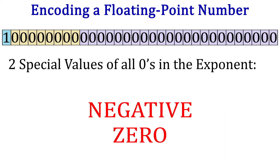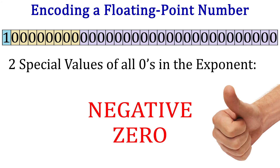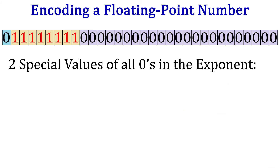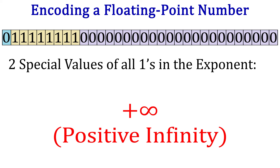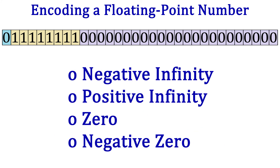If all the exponent bits are one, the sign bit is one, and the significand is all zeros, we have negative infinity. By switching the sign bit, we get positive infinity. Negative infinity, positive infinity, zero, and negative zero are really the only special codes that concern us at this level. I really hope you look into some of these special floating point codes as they give you more insight into binary scientific notation.